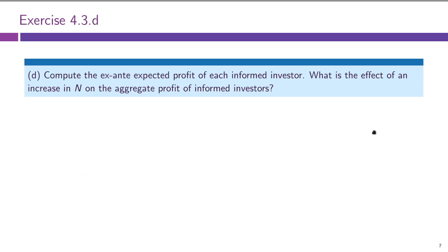There is also Part D. Let's deal with this quickly. Part D asks us to compute the ex ante expected profit of each informed investor, and to compute the effect of an increase in N on the aggregate profit of informed investors.